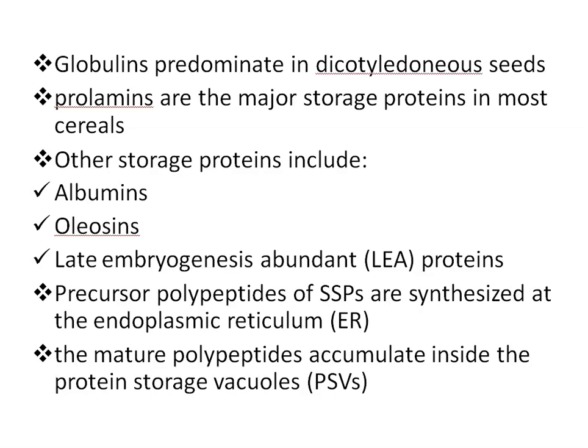Seed storage proteins accumulate mainly in the embryo and cotyledons of dicots and the endosperm of monocots. In developing dicot seeds, the most abundantly expressed storage proteins are members of the 2S albumin, and the 7S and 11S globulin protein families. Globulins predominate in dicotyledonous seeds, whereas prolamines are the major storage proteins in most cereals. Other storage proteins include albumins, prolamines, oleosins, and LEA — late embryogenesis abundant proteins.